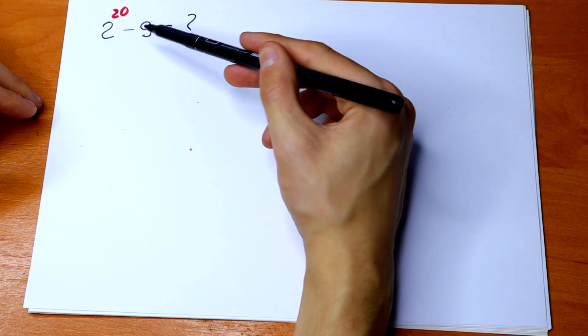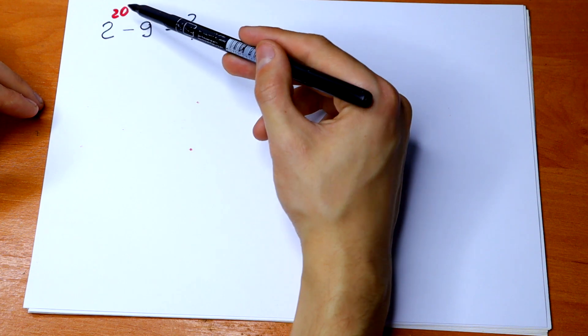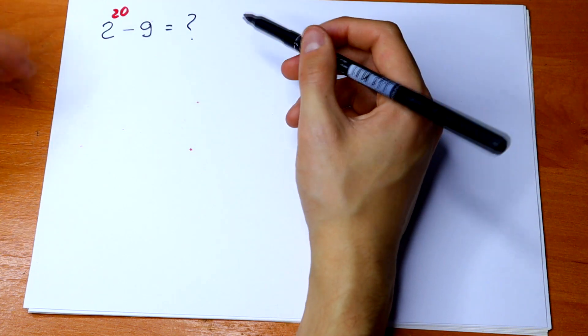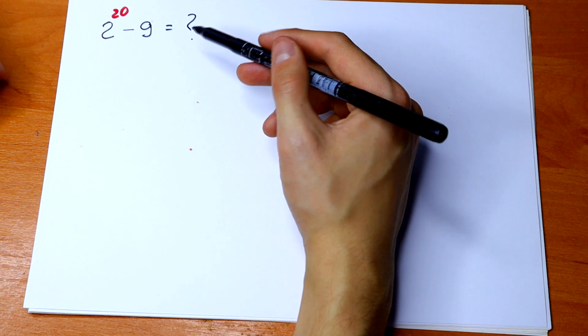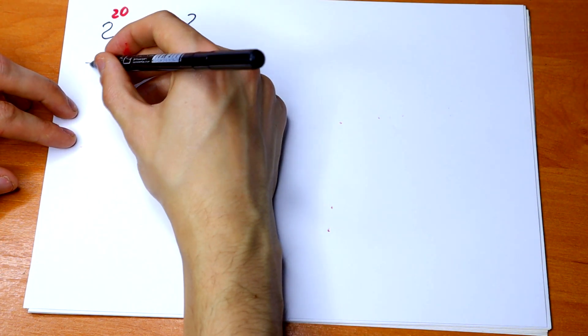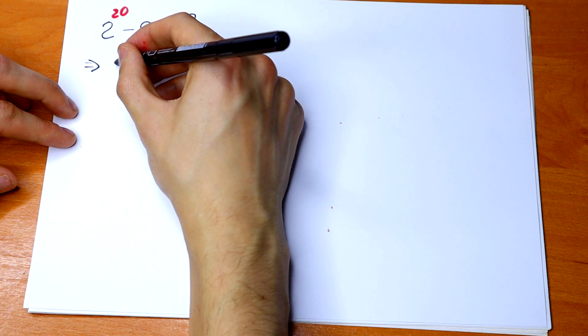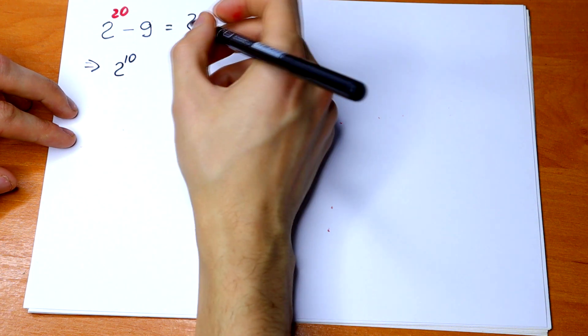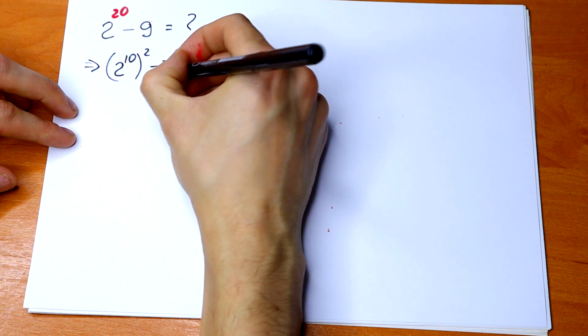We can write 2 to the 20th power as 2 to the 10th power squared, and we can write 9 as 3 squared as well. So let's do this. We can write it as 2 to the 10th power squared minus 3 squared.